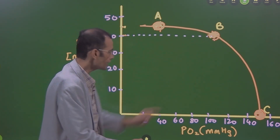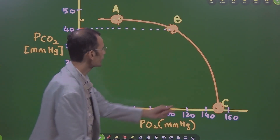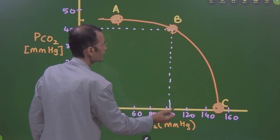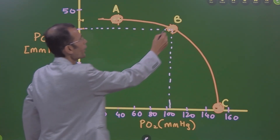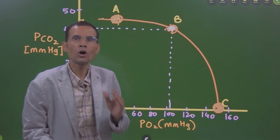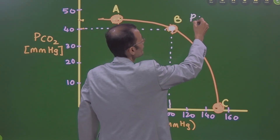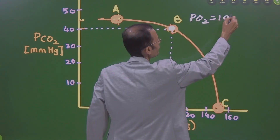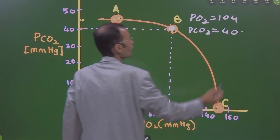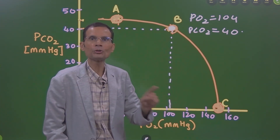PCO2 on the vertical axis is 40 mmHg and PO2 on the horizontal axis is in the range of 104 mmHg. So point B tells us the normal ventilation-perfusion relationship: PO2 is 104 and PCO2 is 40 mmHg. This is the normal V/Q ratio.